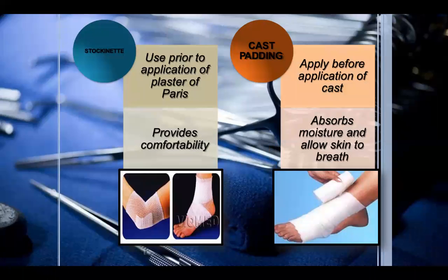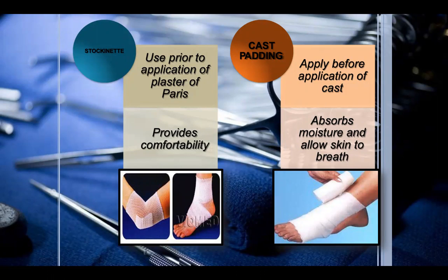Stockinets are used prior to application of plaster of Paris. They are placed to allow air circulation and help heal the wound, providing comfort to the patient. Cast padding is applied before the cast, absorbs fluid, and allows the skin to breathe. It can be applied under or over the plaster of Paris, or where plaster of Paris is not applied.